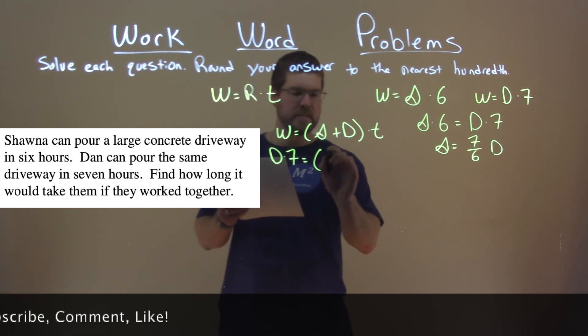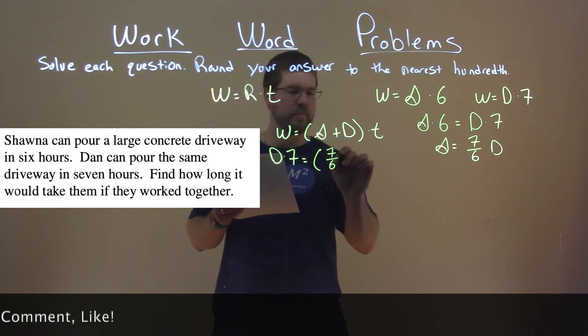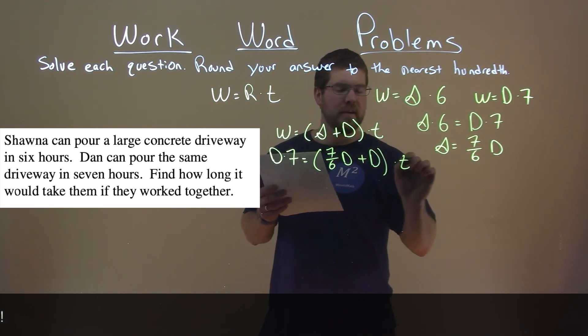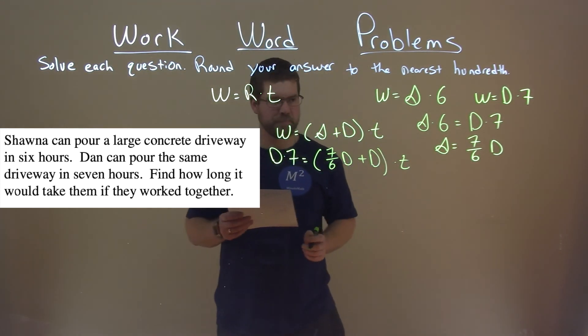Shauna's work rate is equal to seven-sixths of Dan's plus Dan's times T, and we're just substituting this value in here.